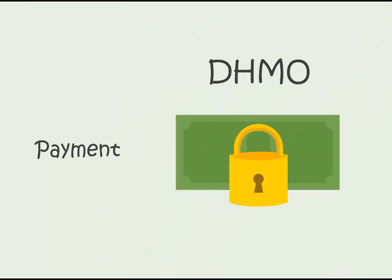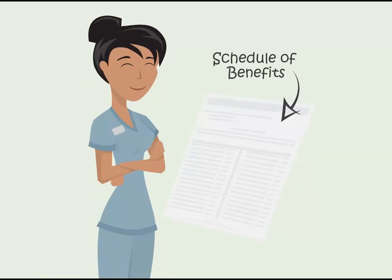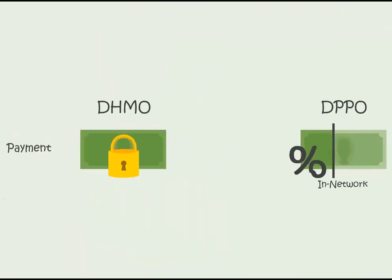Payment. Under the DHMO plan you pay a fixed dollar amount, also called a copayment, that's listed on your schedule of benefits for covered services. A schedule of benefits is a document that lists all the procedures your plan covers and what you pay for each procedure — it's similar to a menu. On a DPPO plan you pay a percentage of the negotiated fee, which was agreed on by your dentist and your insurance carrier for covered procedures, and the insurance company pays the remaining balance.